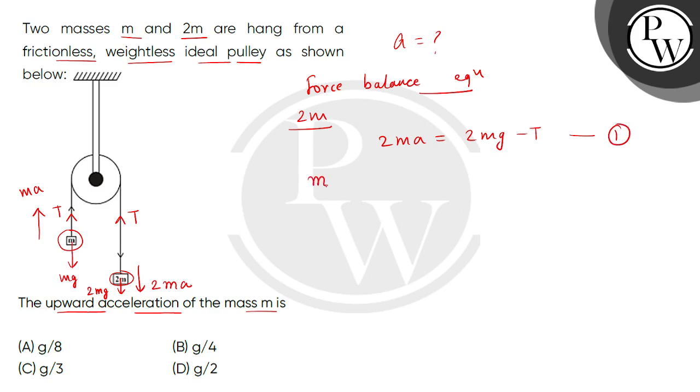Now, we will make force balance equation for the mass M which is M A equals to T minus M G which is equation number 2. Now, we will add both equations.